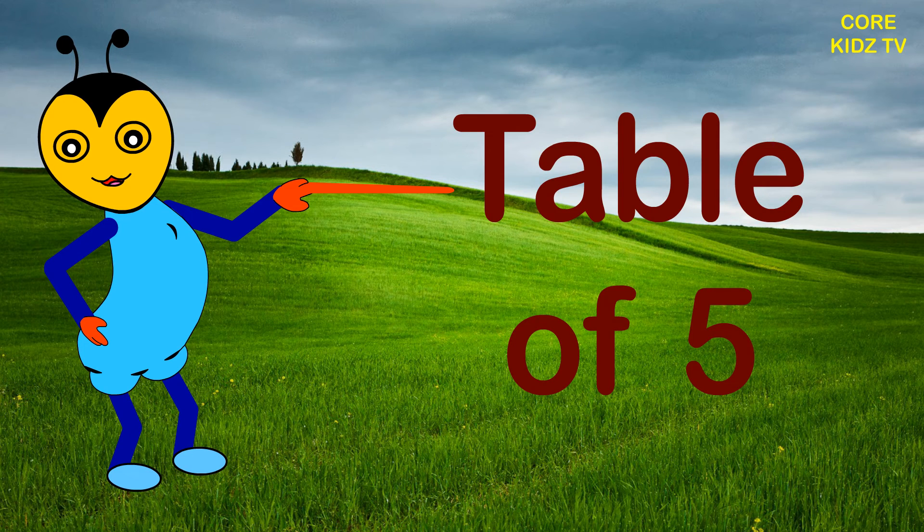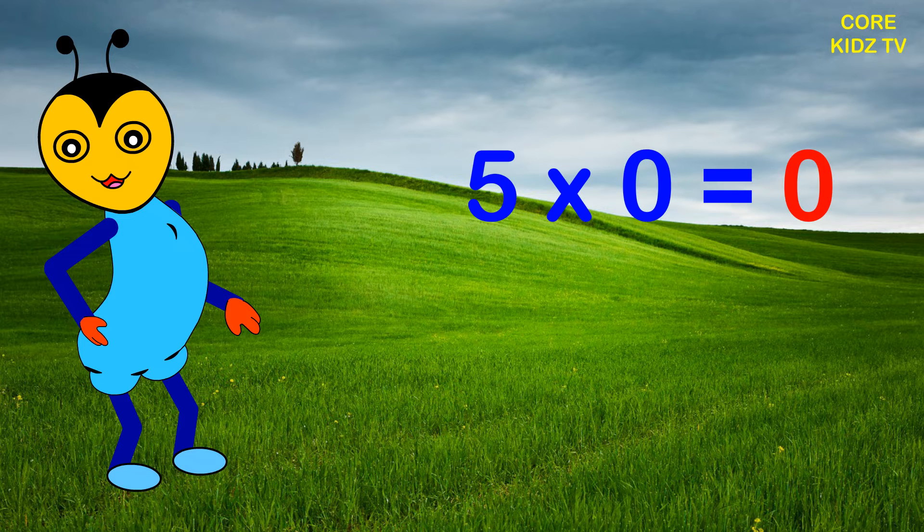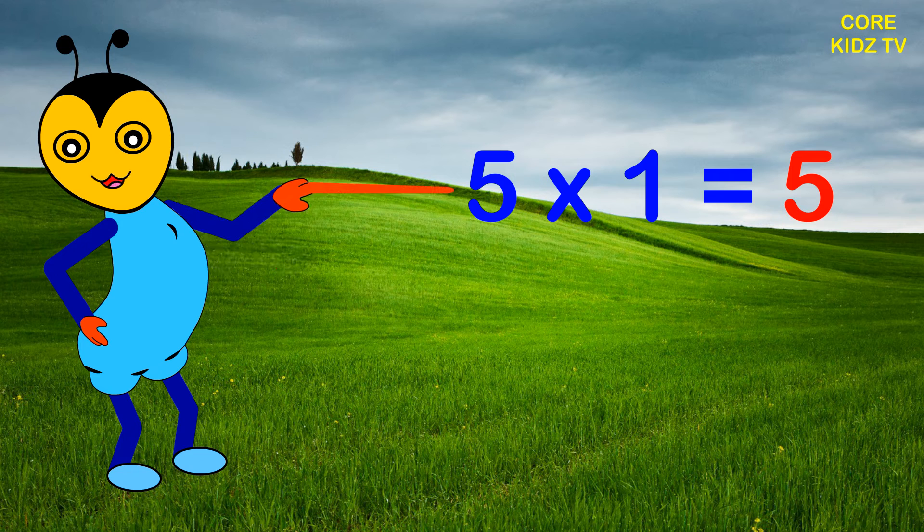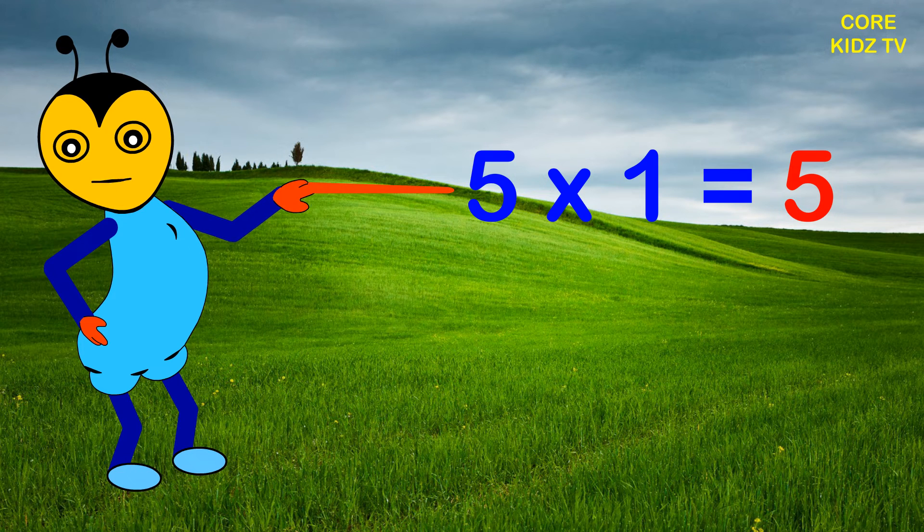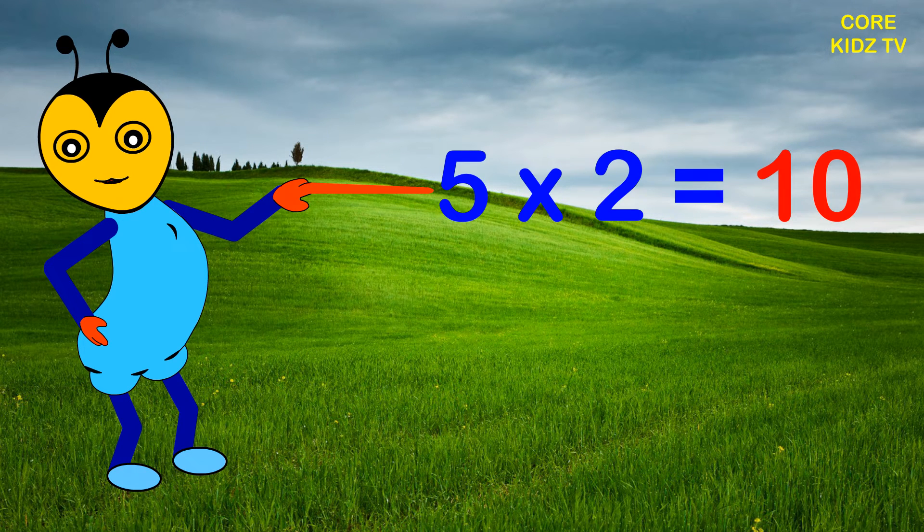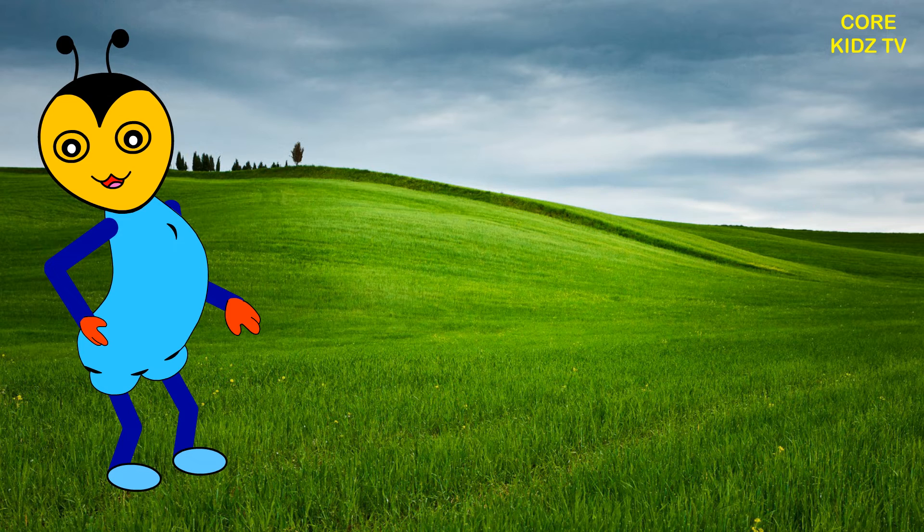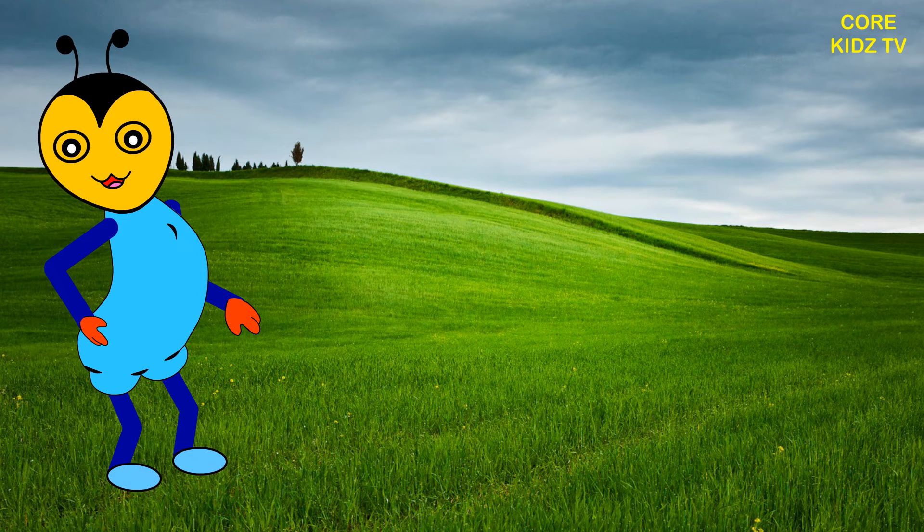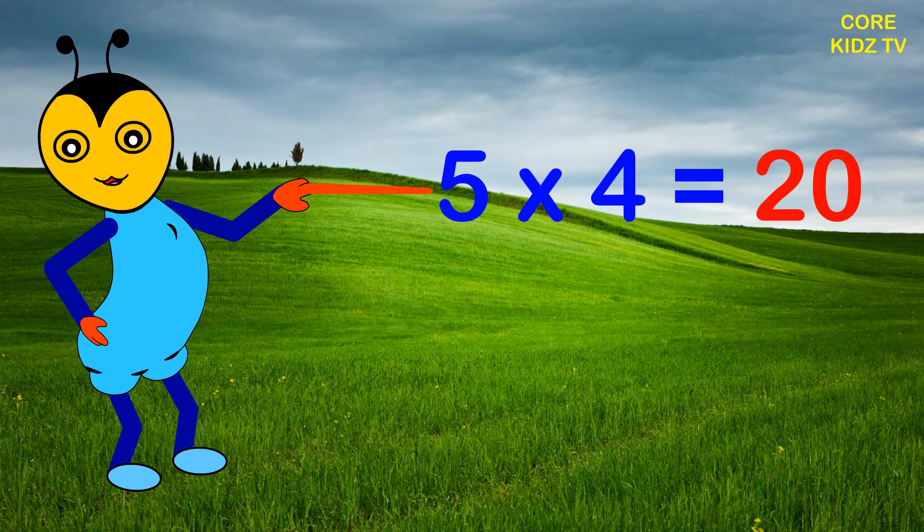Table of five. Five zeros are zero, five ones are five, five twos are ten, five threes are fifteen, five fours are twenty.